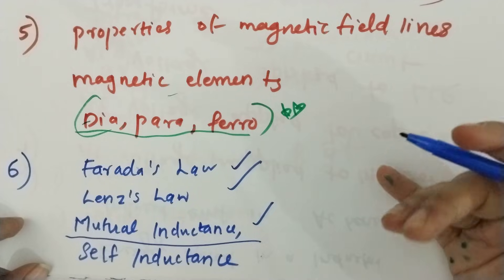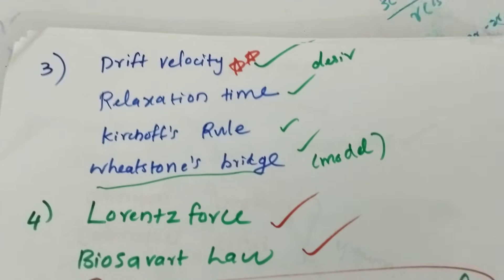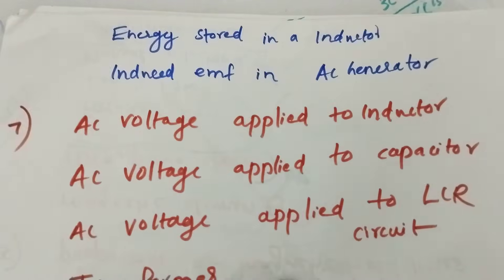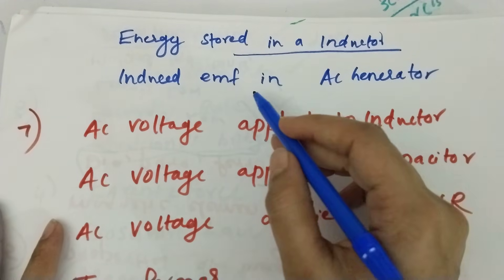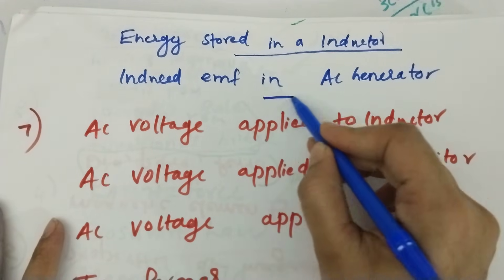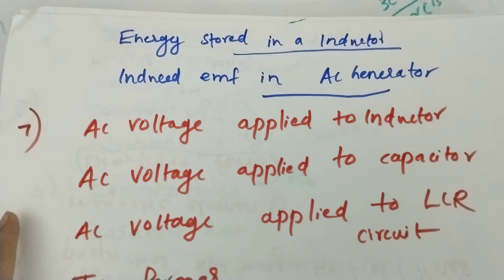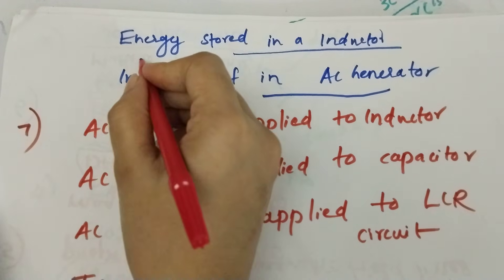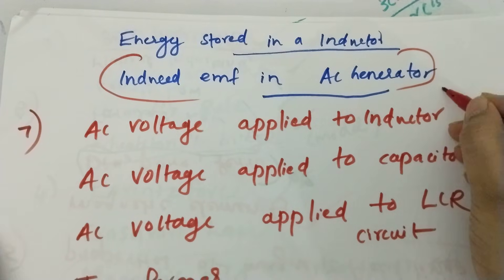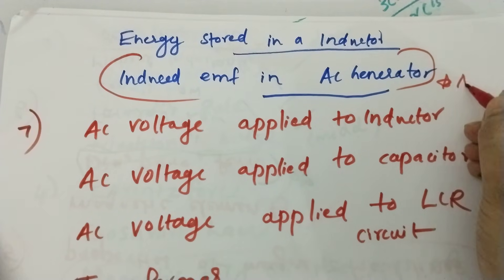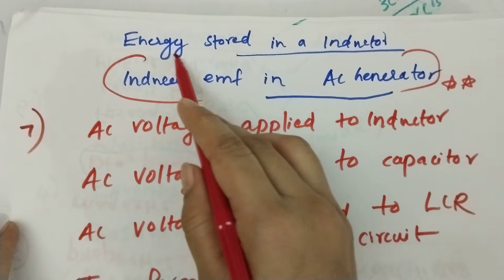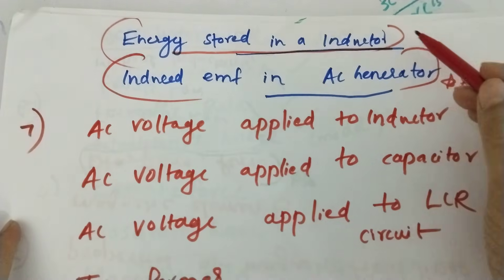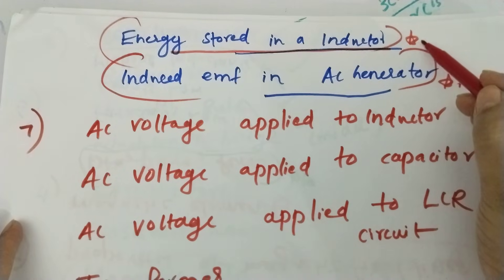Now let's explain self-induction. Mutual inductance is the derivation — the phasor derivations. This is the definition of energy stored in an inductor, which is the induced EMF and AC generator. This topic has a high chance — derive an expression for induced EMF and AC generator. Energy stored in inductance is the high chance of the second chapter.